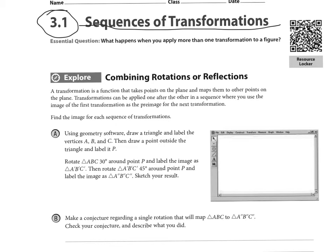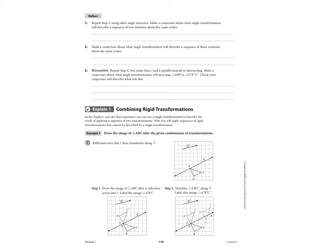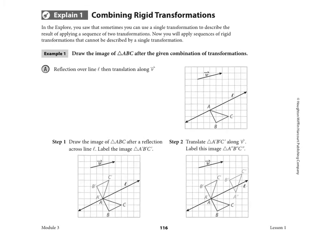And what we're going to look at is what happens when we apply more than one transformation to a figure. And so if you look, we're not going to do this first page, but if you look to the next page, page 116, and we're going to look down here at example one.